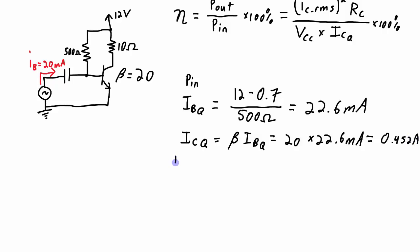I now have enough information to calculate the input power. Input power is the 12 volt source times the ICQ that it produces, 0.452 amps, to give me an input power of 5.424 watts.